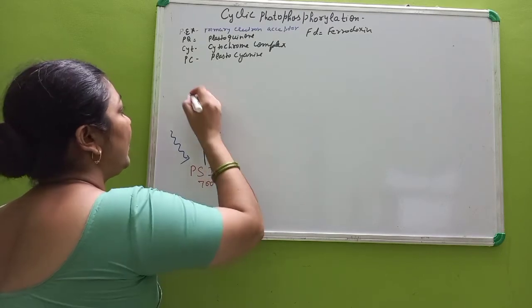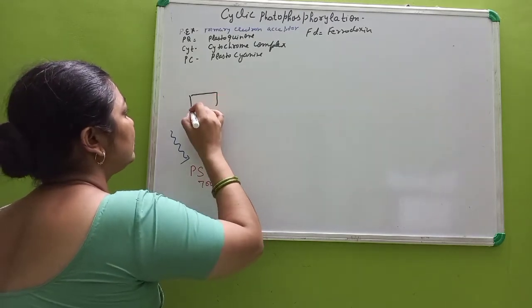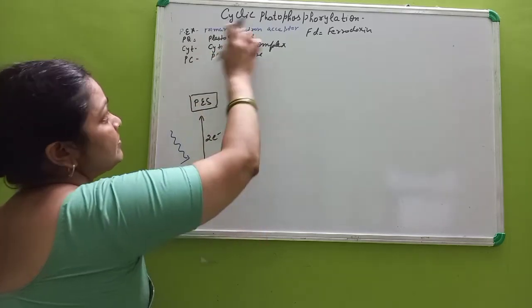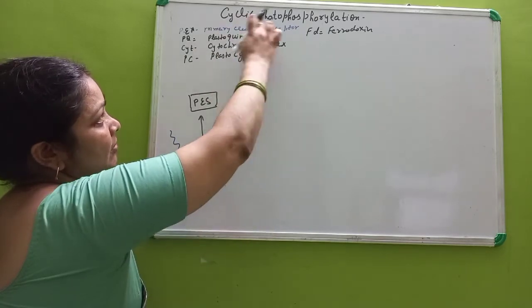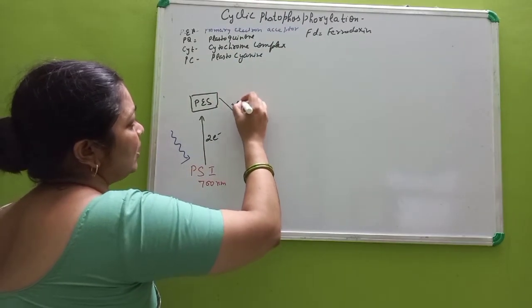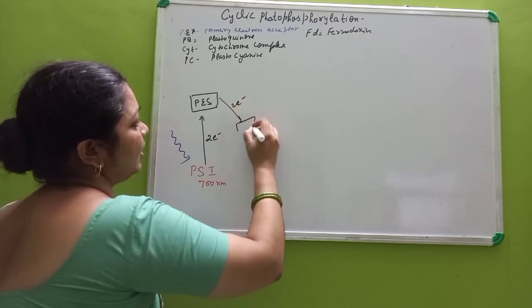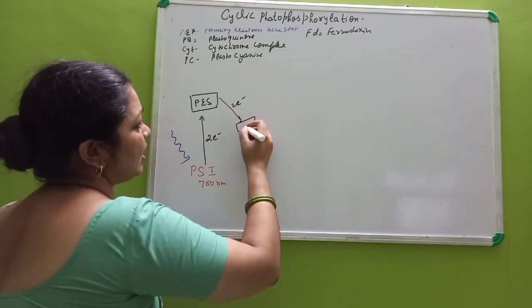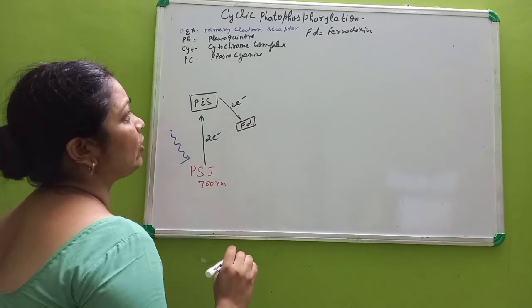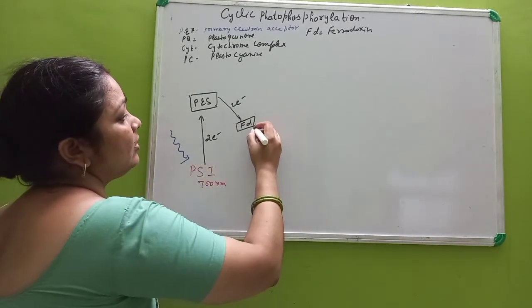And this is accepted by a primary electron acceptor. PES means primary electron acceptor. Then it passes to the electron transport chain and it is first accepted by FD, means ferredoxin.